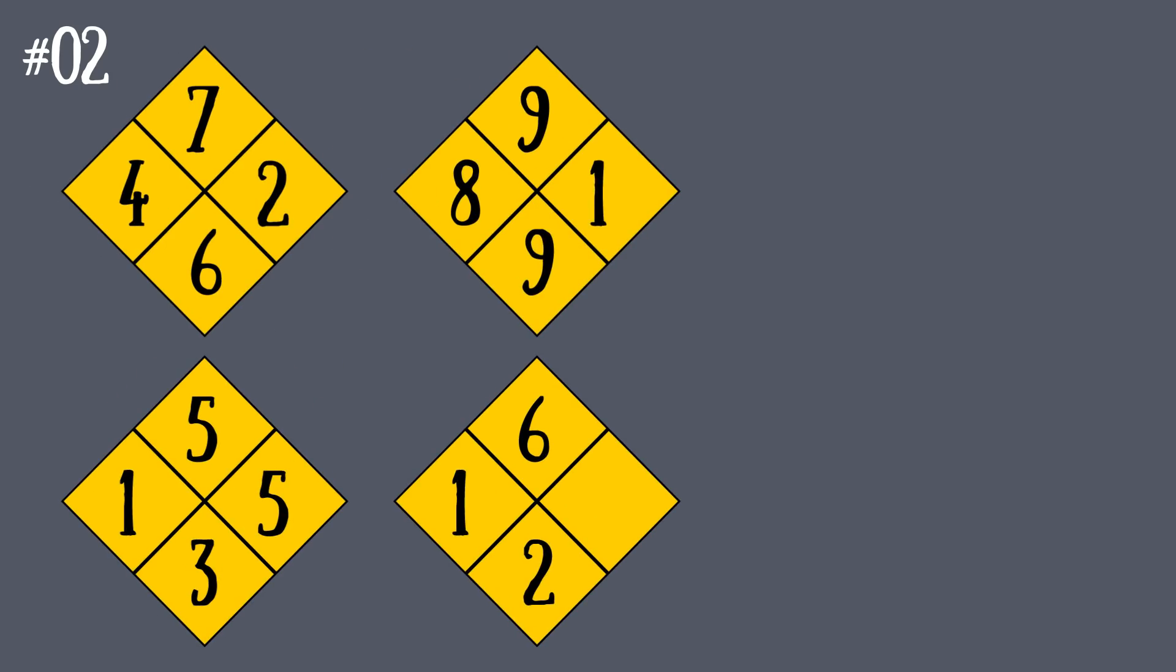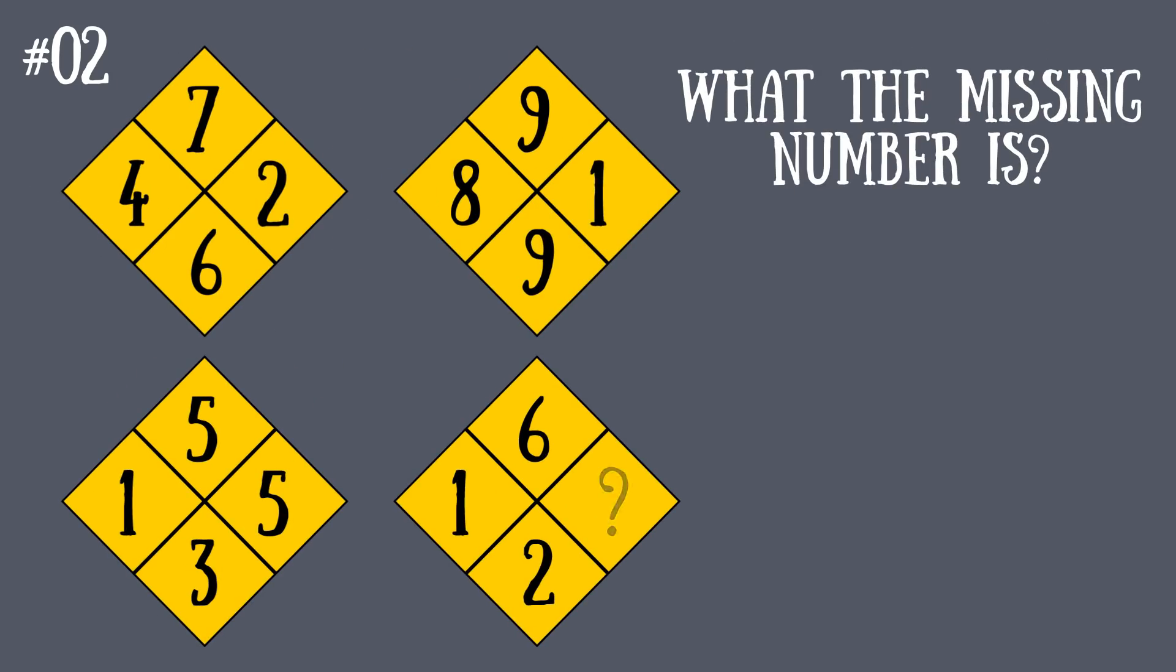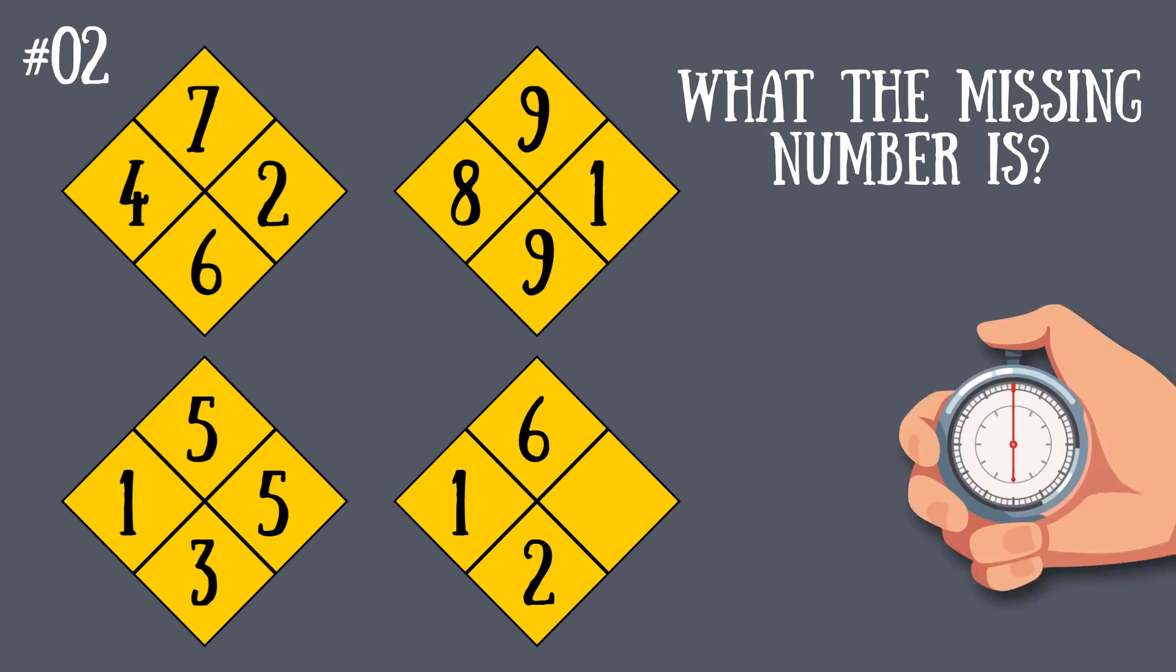Riddle number two: Take a look at these four rhombuses. In the last one, one of the numbers is missing. Can you figure out what this number is? You have 15 seconds.